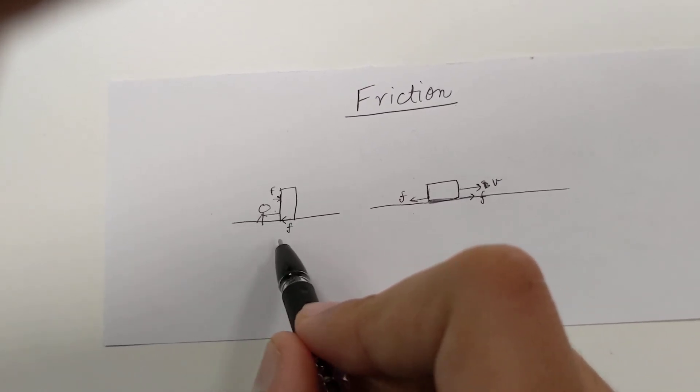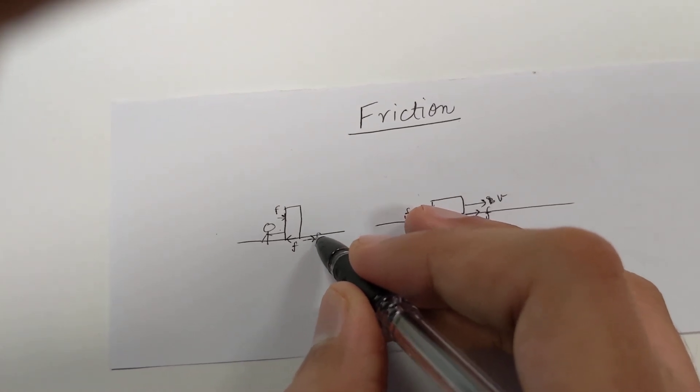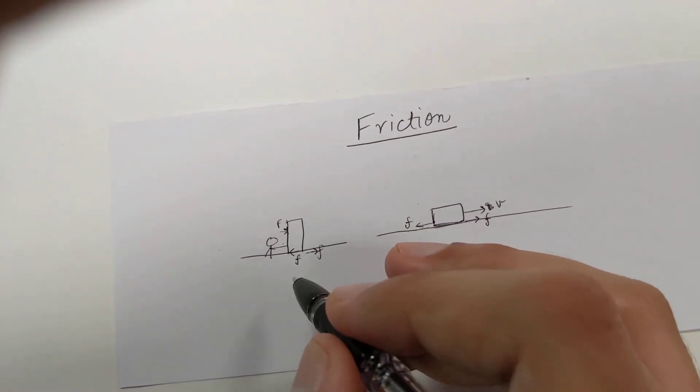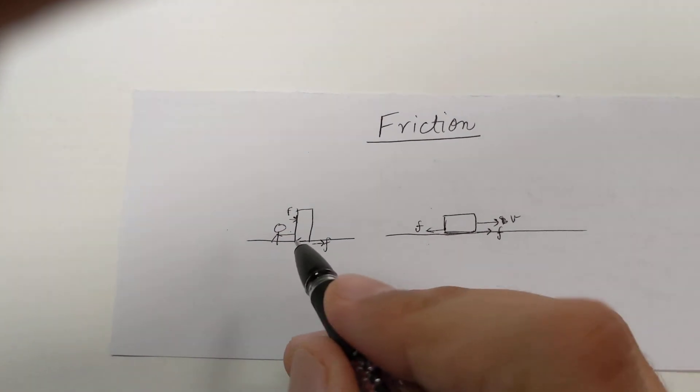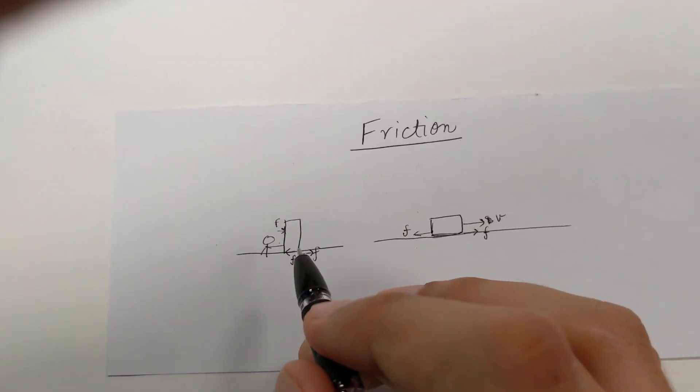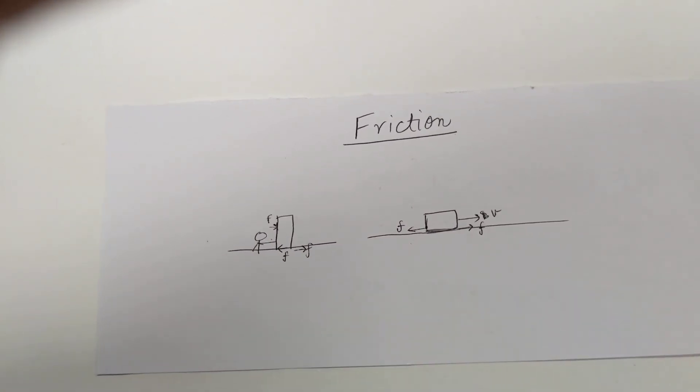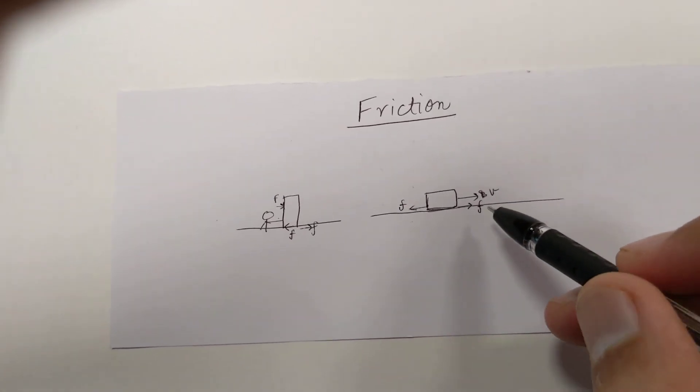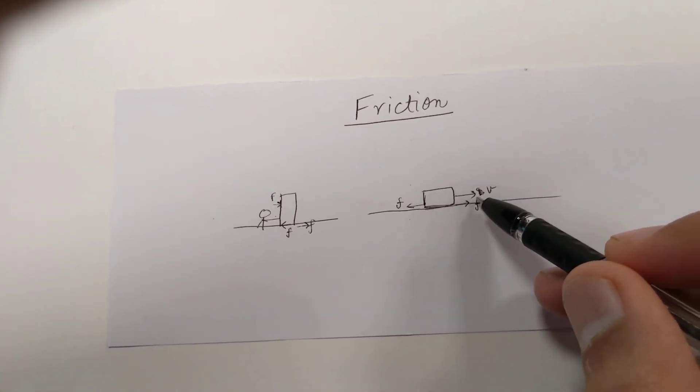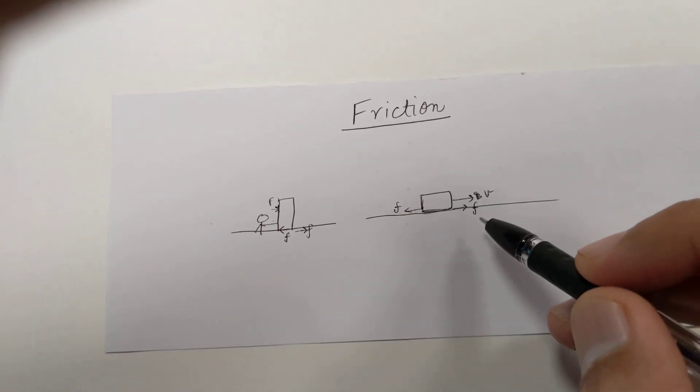The friction is acting in this direction on the almira and in the backward direction on the ground, without any relative motion happening right now. But it is trying to oppose the relative motion which can happen due to this force. This kind of friction is called static friction, and if the relative motion has already started, then that friction is called dynamic friction.